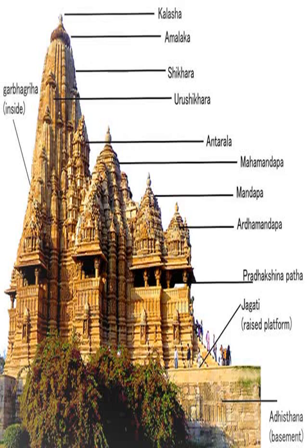At the center of the temple, typically below and sometimes above or next to the deity, is a mere hollow space with no decoration, symbolically representing Purusha — the supreme principle, the sacred universal one without form, which is present everywhere, connects everything, and is the essence of everyone. A Hindu temple is meant to encourage reflection, facilitate purification of one's mind, and trigger the process of inner realization within the devotee. The specific process is left to the devotee's school of belief, and the primary deity of different Hindu temples varies to reflect this spiritual spectrum.